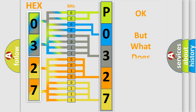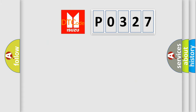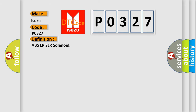The number itself does not make sense to us if we cannot assign information about what it actually expresses. So, what does the Diagnostic Trouble Code P0327 interpret specifically for Isuzu car manufacturers? The basic definition is: ABSLR-SLR solenoid.